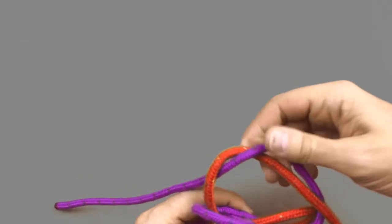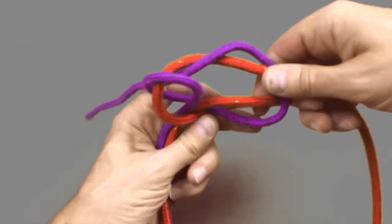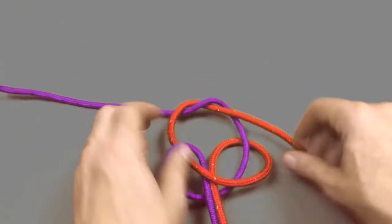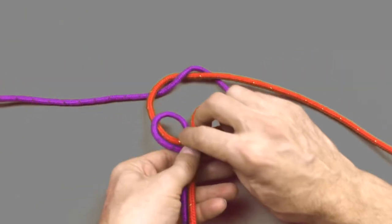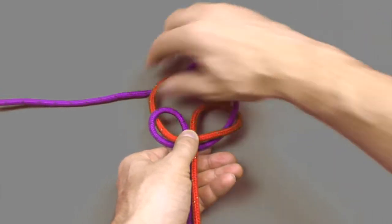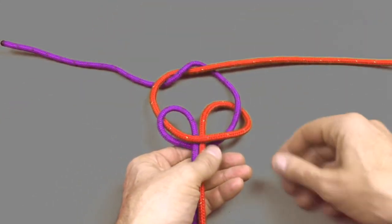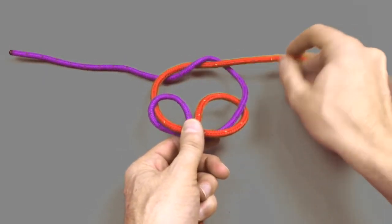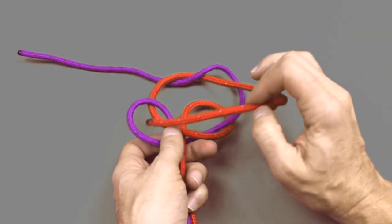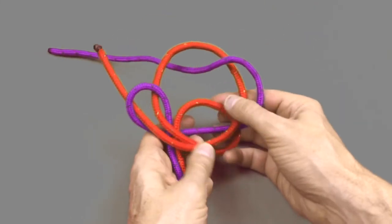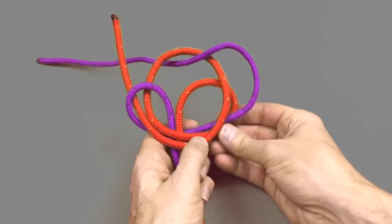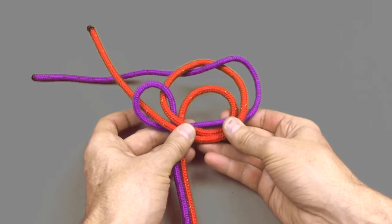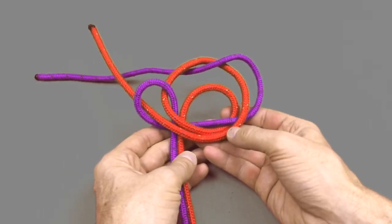Next step in the process is to do our second wall knot. So holding the first wall knot down in the center take the red cord and then pull it over the top of the purple one, bringing it along parallel to the first wall knot and then up through the purple loop. Just teasing it through and keeping it parallel to the red line from the first wall knot.